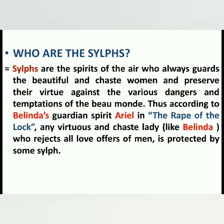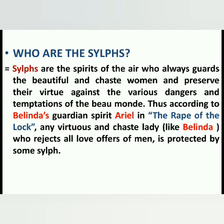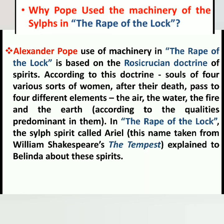The sylphs are spirits of the air who always guard beautiful and chaste virgin women, preserving their virtue against various dangers and temptations. In The Rape of the Lock, through the aerial spirit, Alexander Pope makes it clear that any virtuous and chaste lady — like Belinda — who rejects all love offers from men is protected by sylphs. Sylphs are light airy beings in charge of protecting virtuous and chaste ladies.